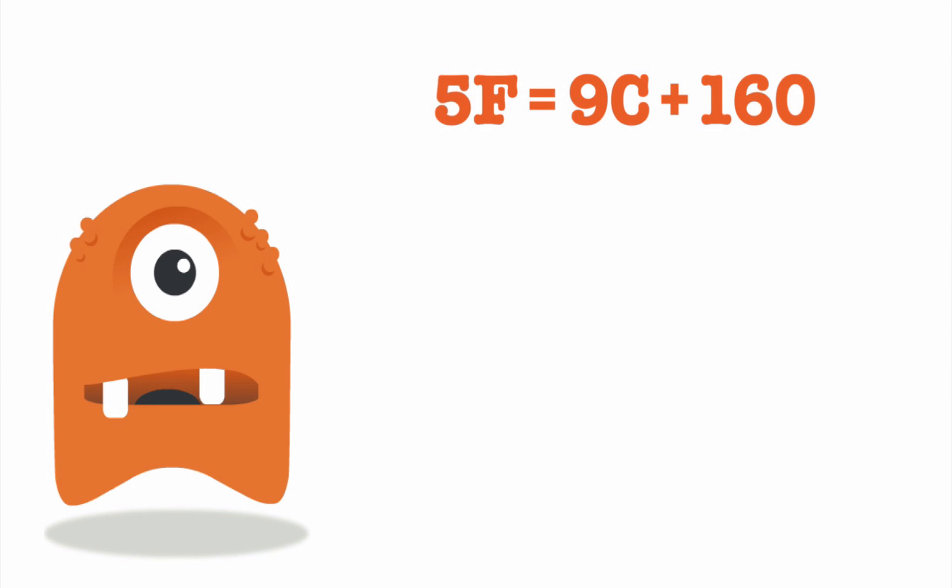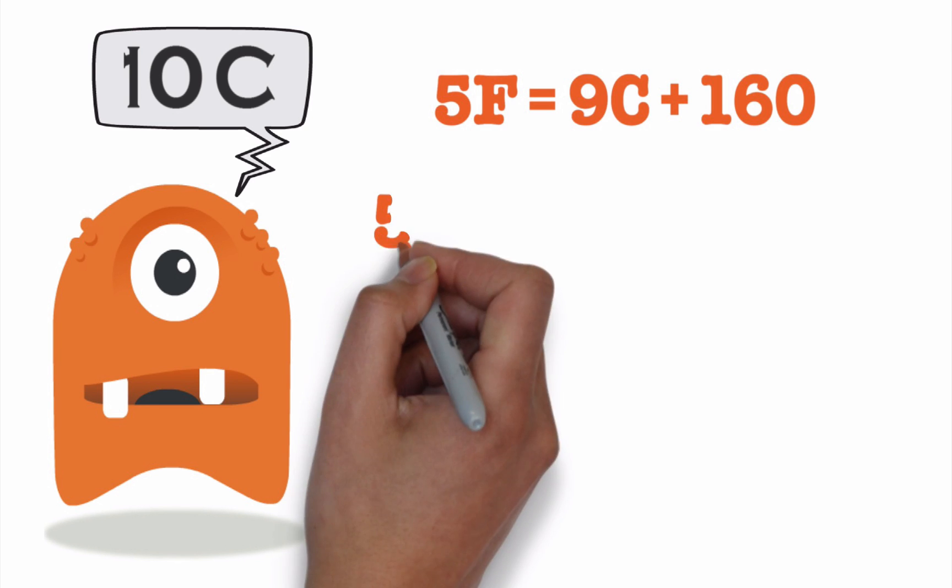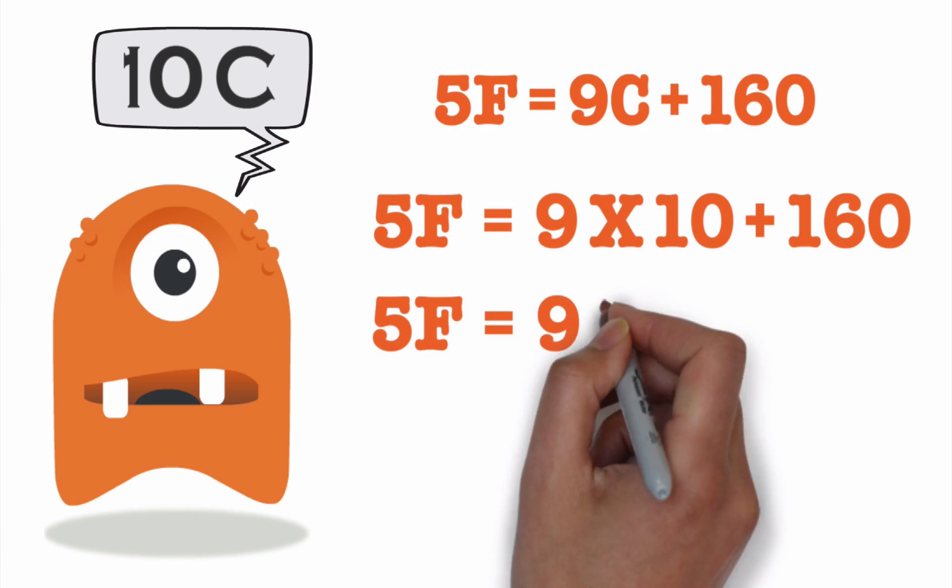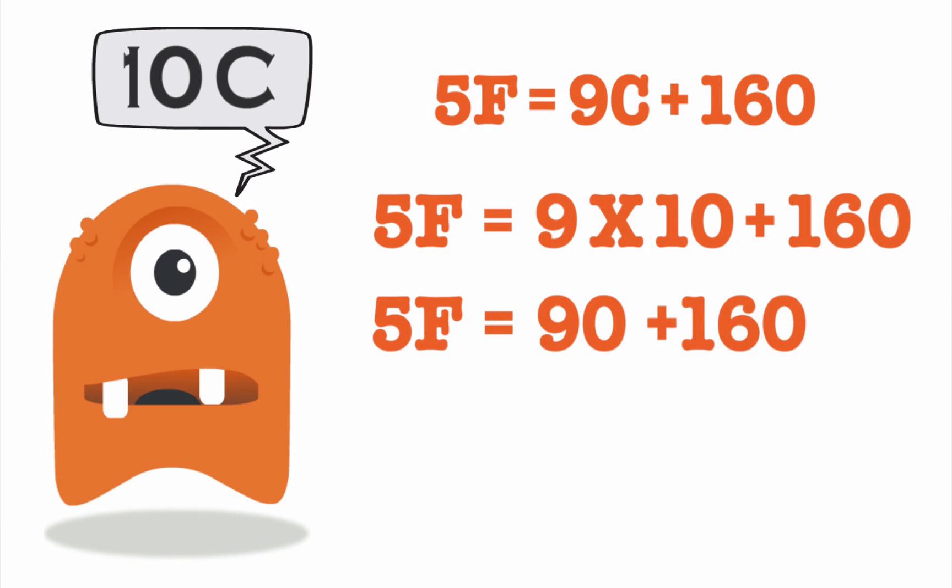What is 10 degrees Celsius equal to in Fahrenheit? Let's plug these values in our shiny new formula. That gives us 5F equals 9 times 10 plus 160, or 5F equals 90 plus 160, which gives us 250. So the value of F is 250 divided by 5, which is 50 degrees Fahrenheit.